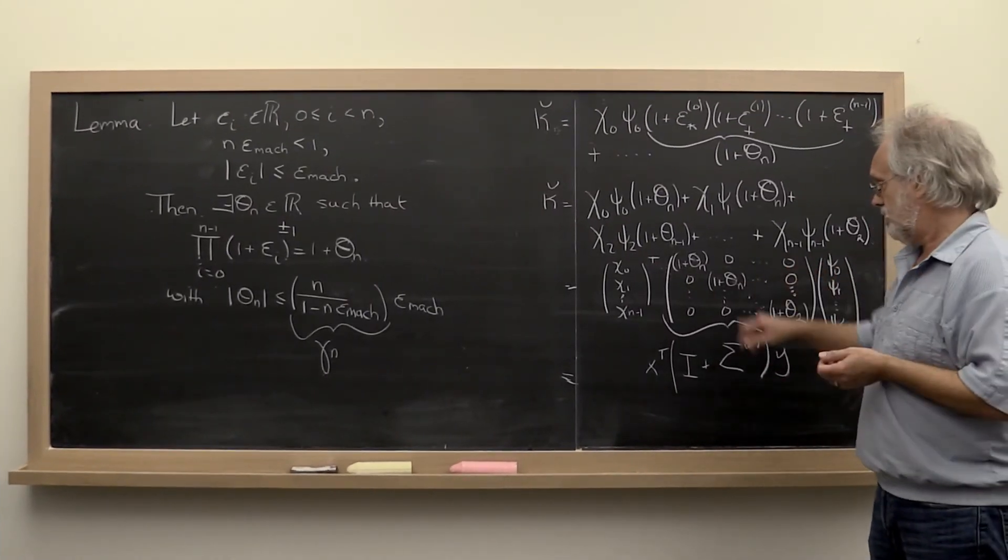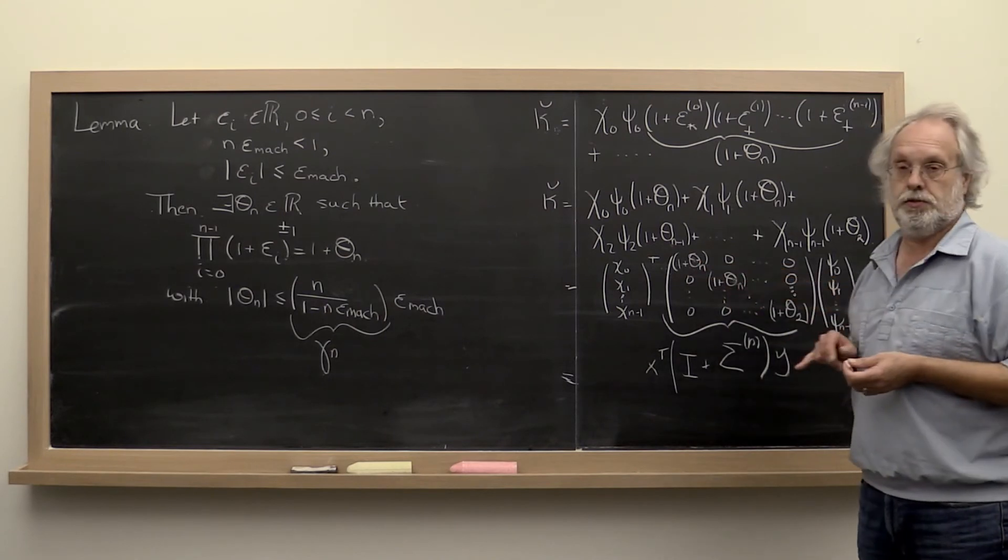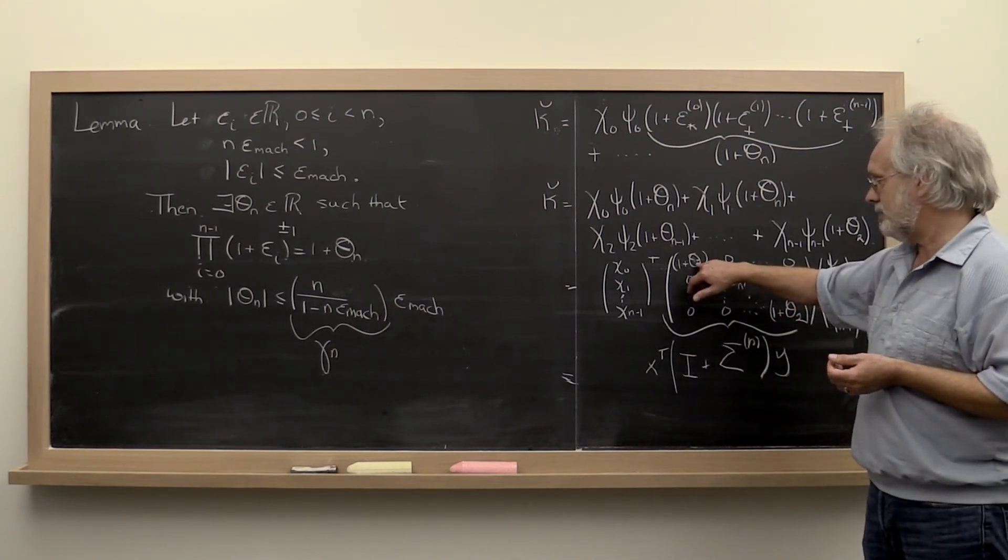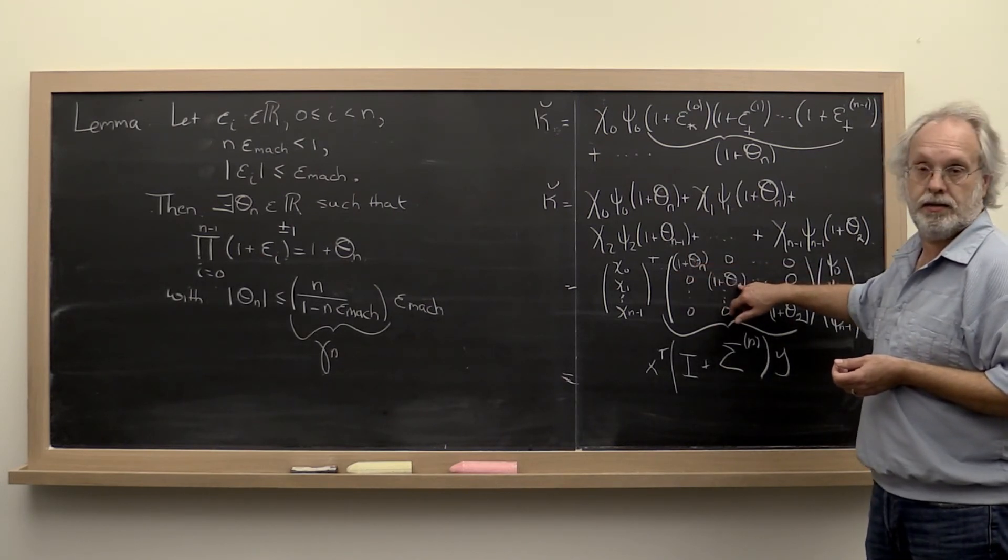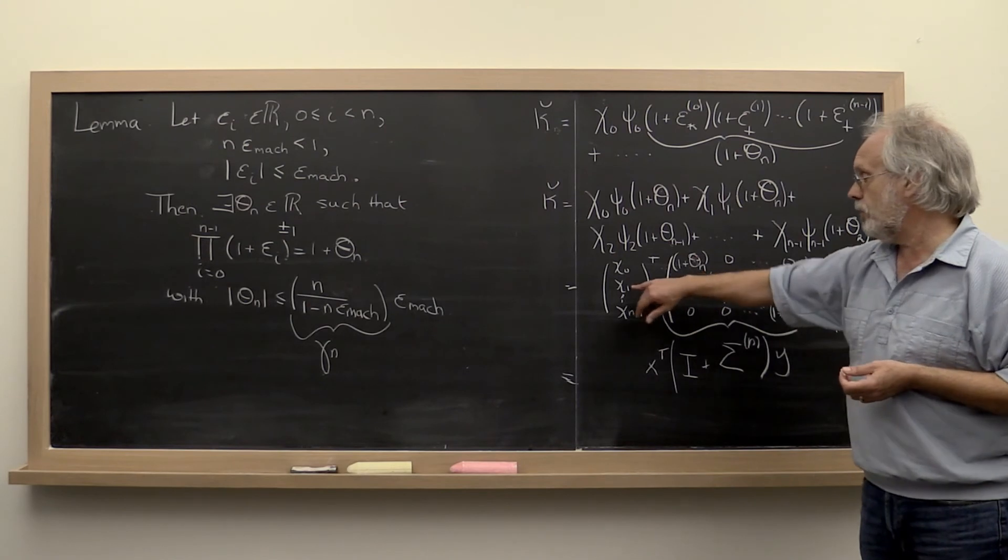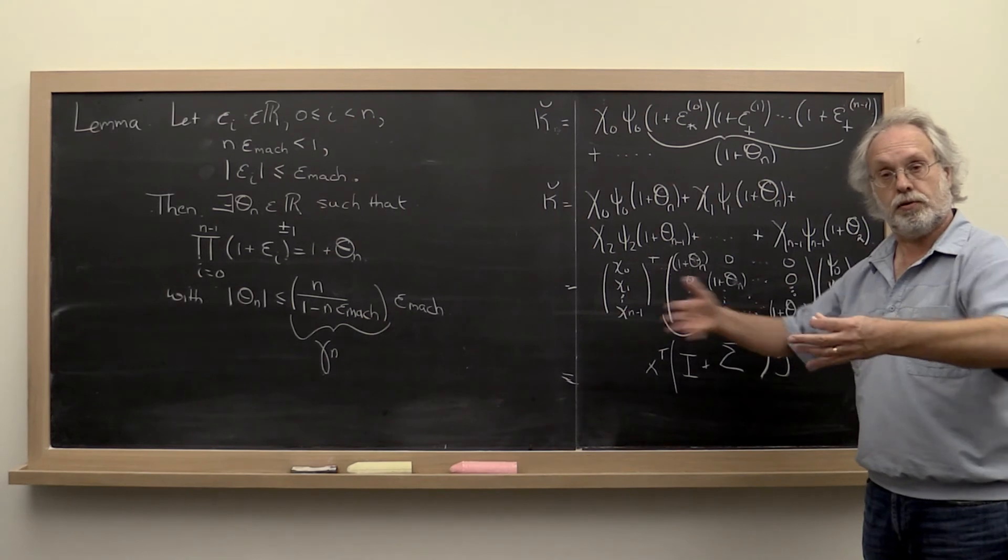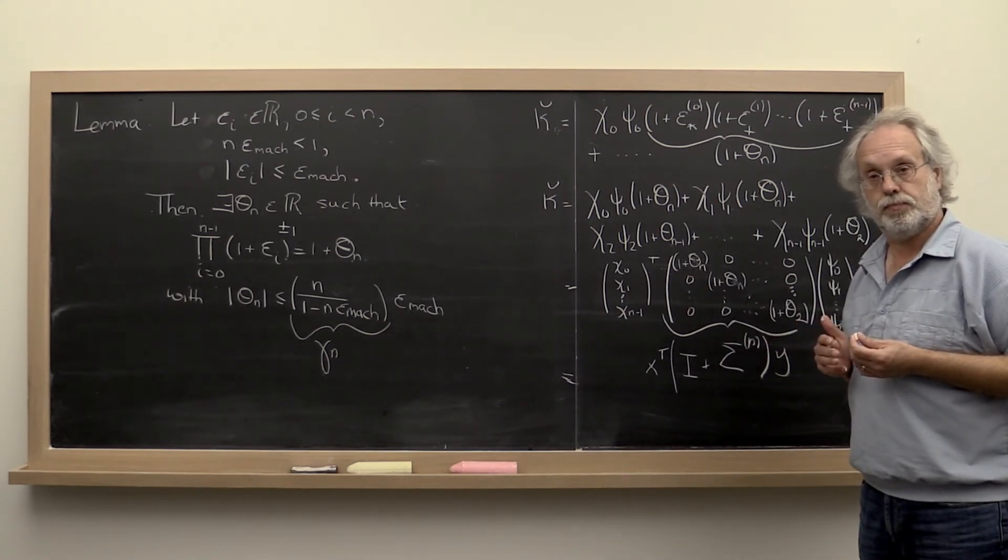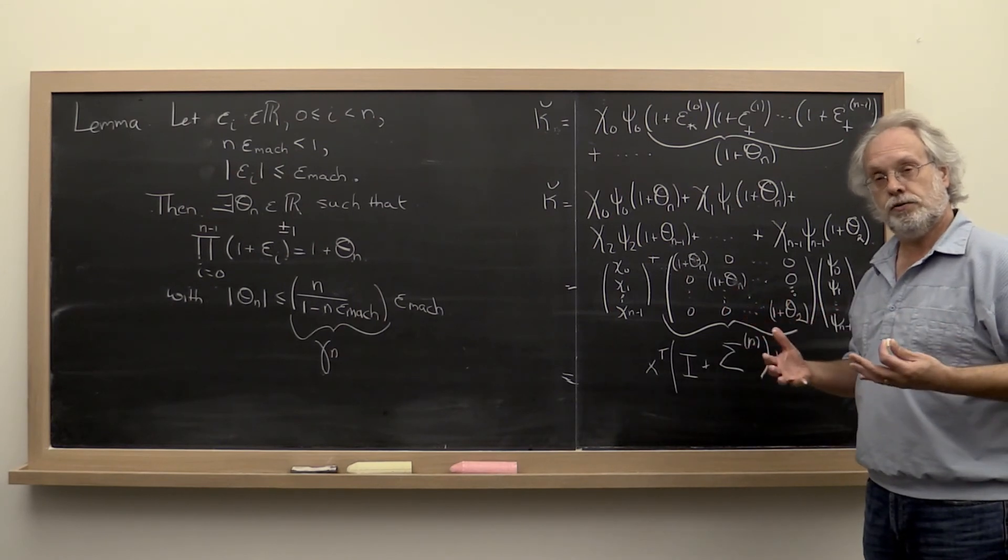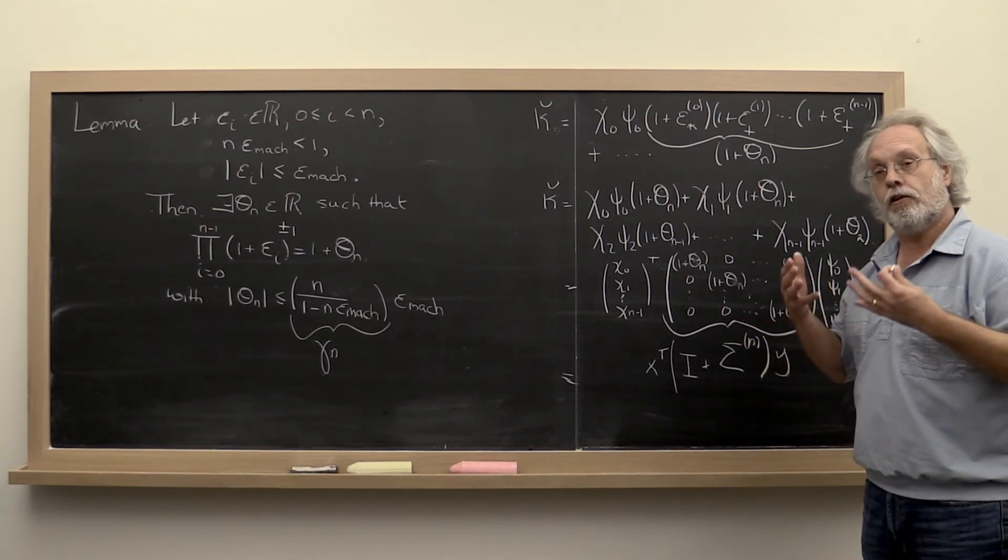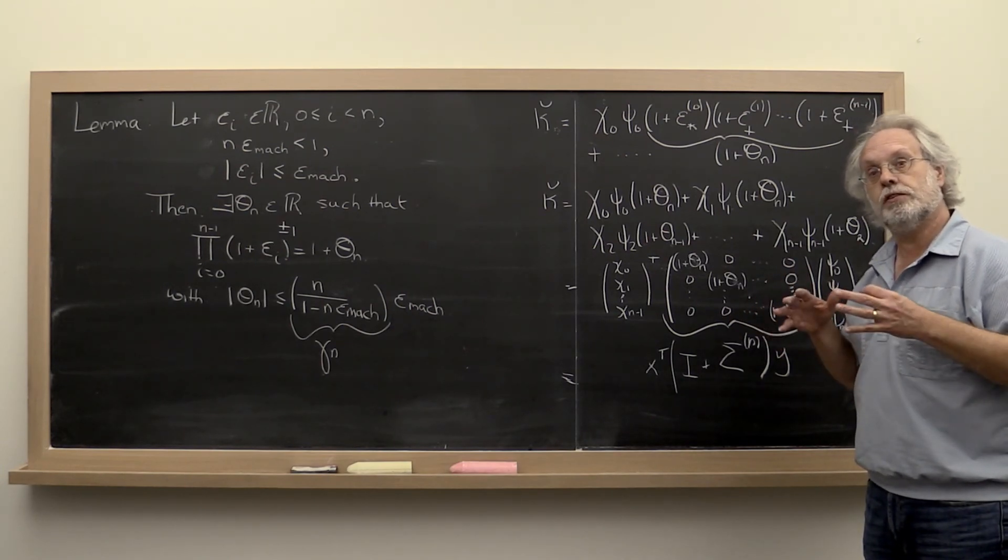Now I just want to stress that these theta sub n's are order of magnitude values. This theta_n is almost surely a different value than this theta sub n. Both signify that whatever they multiply has been hit by that many errors in the process. But you have to be very careful that you don't start using these values as if they are the same value, which means in particular that you need to be a little bit careful when you try to factor these out.